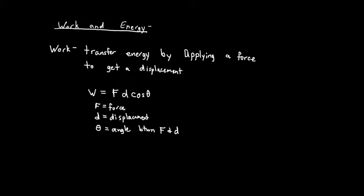If I have a force acting upward — we can draw that as a vector — and a displacement acting entirely to the right, also a vector, the angle between those two is 90 degrees. This force isn't acting in the same direction as the displacement at all; they're operating completely perpendicular to each other. The cosine of 90 is zero, so this force does no work.